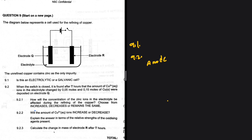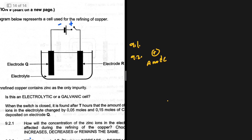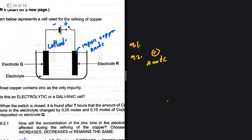In an electrolytic cell we have a positive terminal and a negative terminal. The anode is found at the positive terminal — that is true for all electrolytic cells. So we know that here we have the impure copper at the anode, and electrode Q at the negative terminal is the cathode.